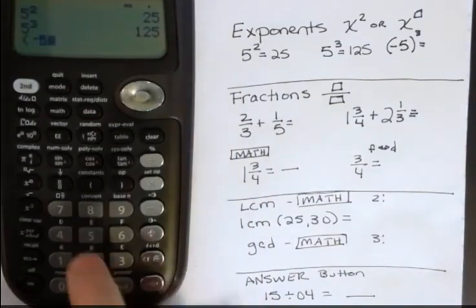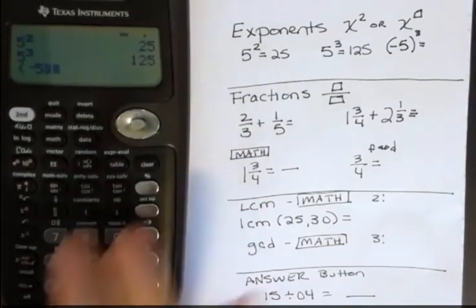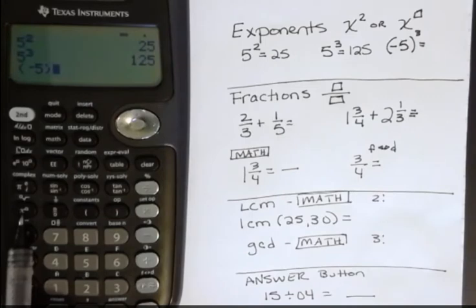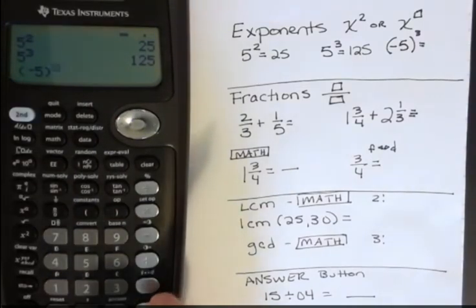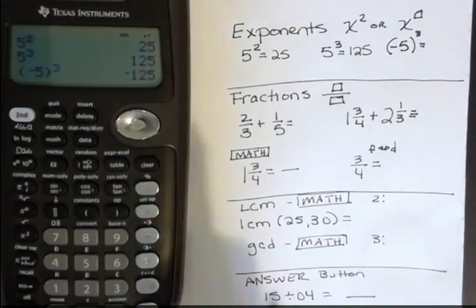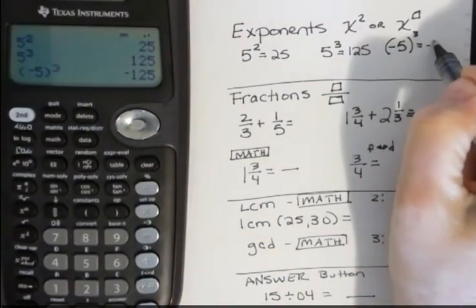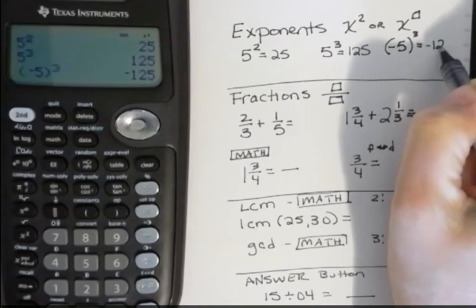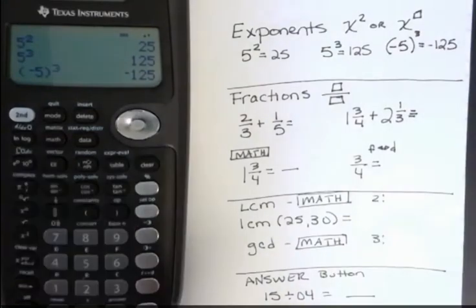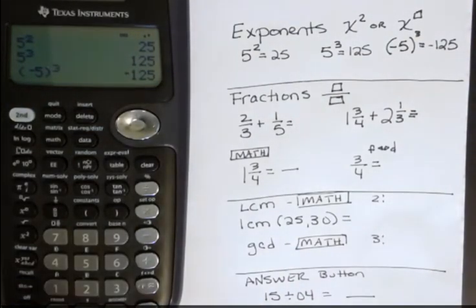So we have negative 5, and then close the parentheses, and then hit that power button again, and tell this now we want this to go to the third power, and that would give us negative 125. And I could have used even power and maybe demonstrated that a little nicer, but it works either way. So that's the power button.